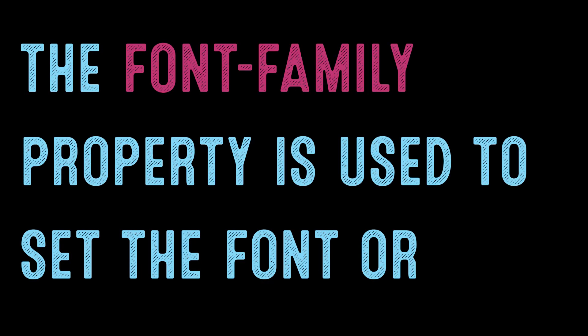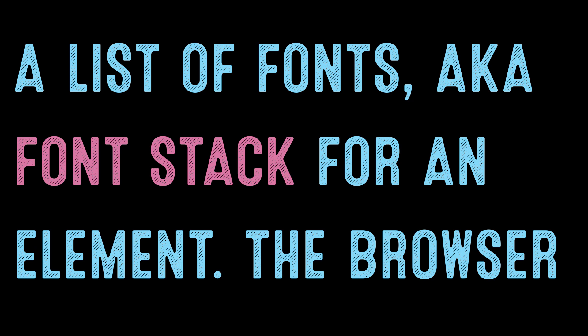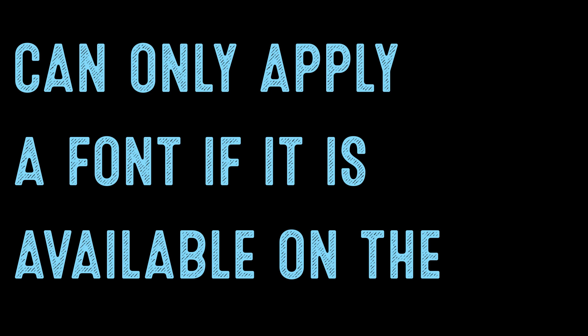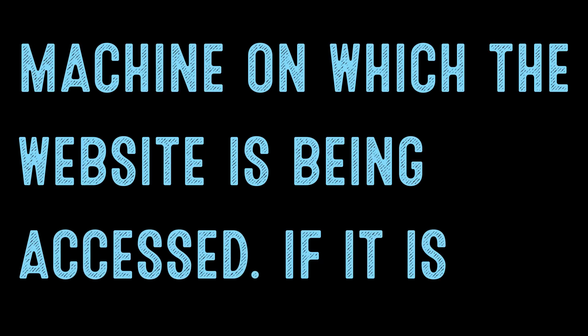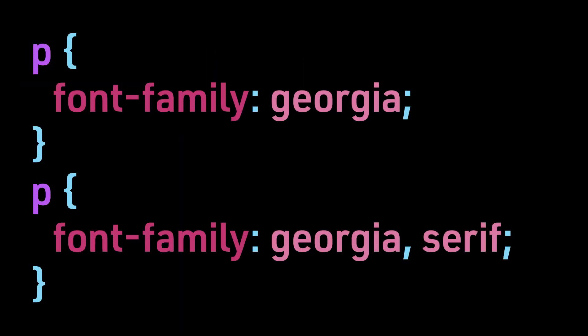The font-family property is used to set the font, or a list of fonts — also known as the font stack — for an element. The browser can only apply a font if it is available on the machine on which the website is being accessed. If it is not available, the browser will load a default font. These are examples for paragraph text: p { font-family: Georgia; } and p { font-family: Georgia, serif; }